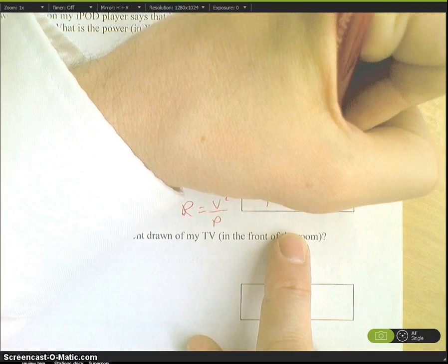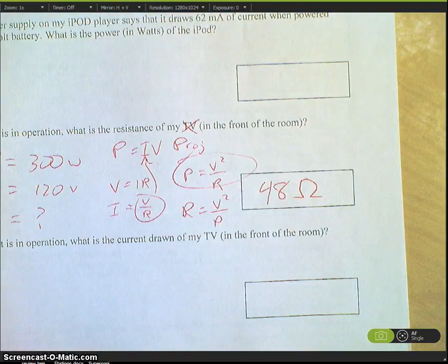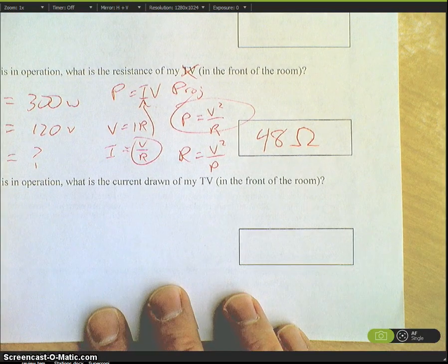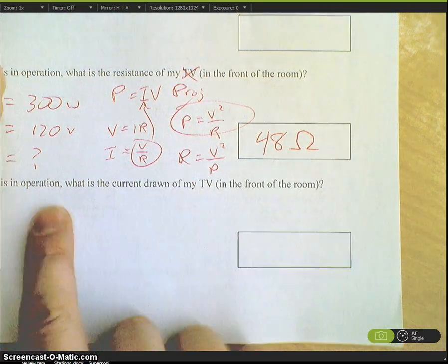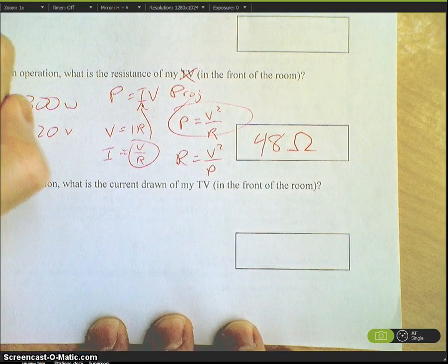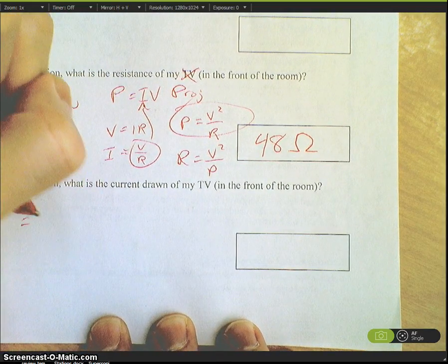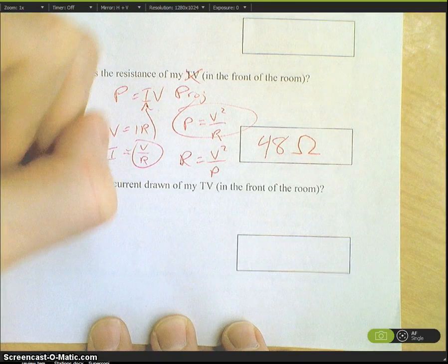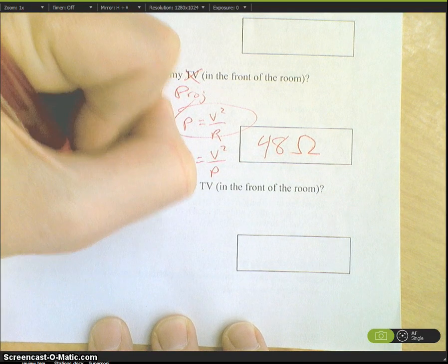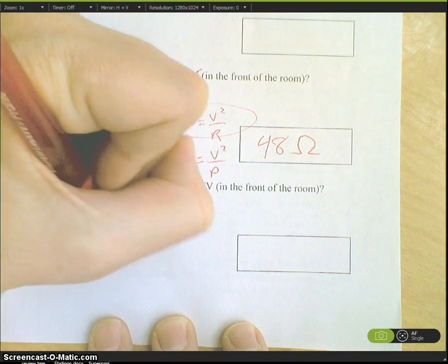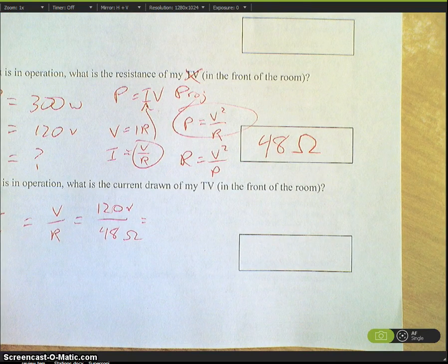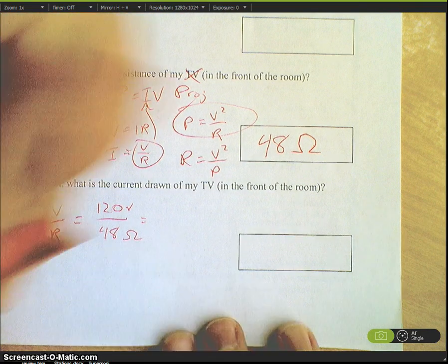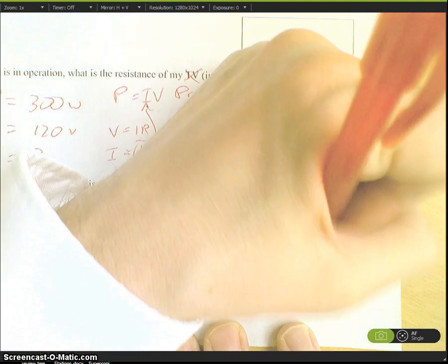When it's in operation, what's the current? Current is equal to V over R. We know the voltage: 120 volts over 48 ohms. 120 divided by 48 gives us 2.5 amps.